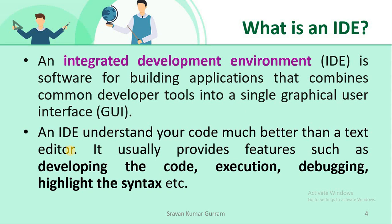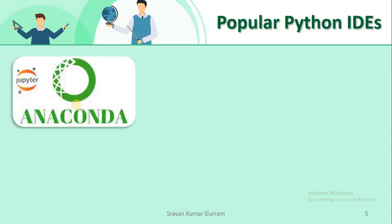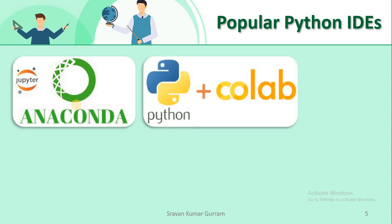An IDE understands your code much better than a text editor. A normal text editor cannot understand Python syntaxes, but the IDE we are going to use for Python can understand all the syntactical rules of Python and can also give suggestions to you. Now let us see some popular IDEs for Python. The first one is Anaconda Navigator — this is a very popular IDE to execute Python and machine learning programs. Next is Google Collaboratory, or simply Google Colab, which can be used for all types of Python, machine learning, and data science programs.